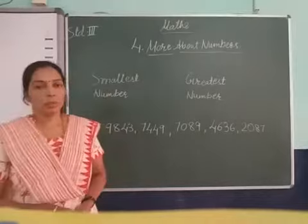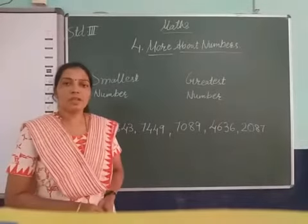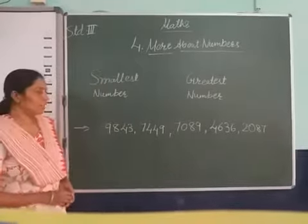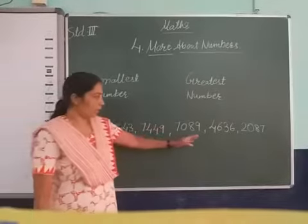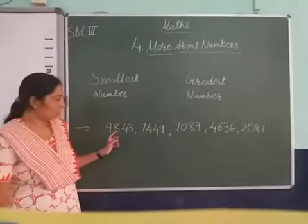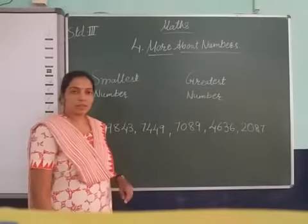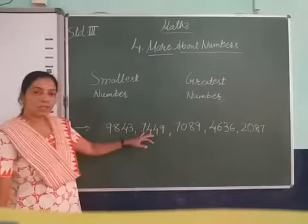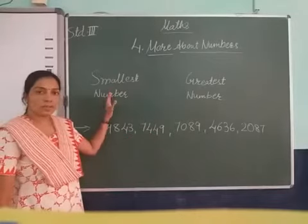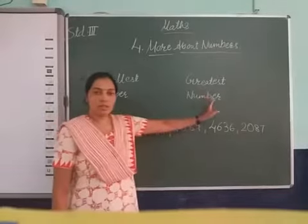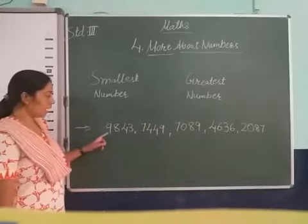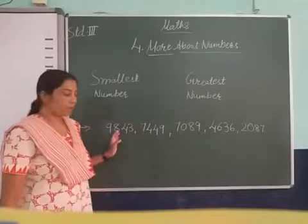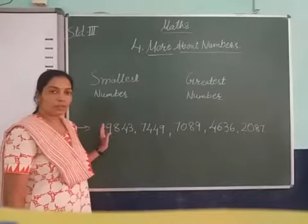Students, one more point in this chapter is smaller and greater number. Here I take one question where 5 numbers are given. Let me see out of these numbers which one is the smallest number and which one is the greater number. So how we see these numbers, what is the greater and smaller — how will we find?